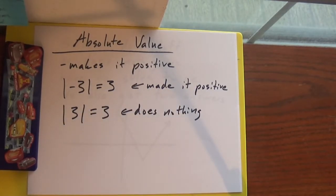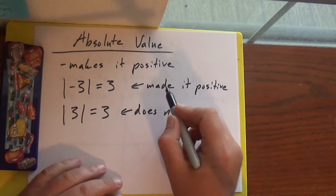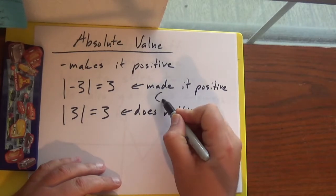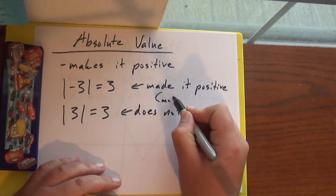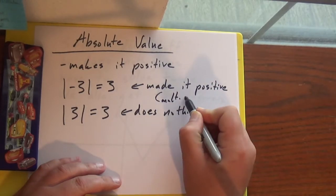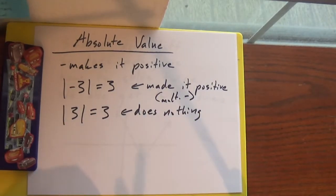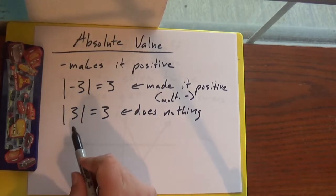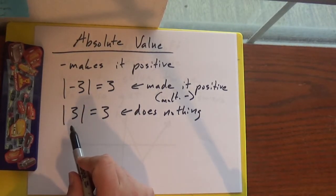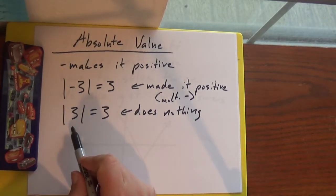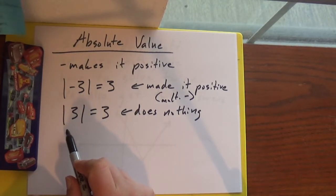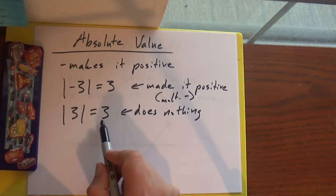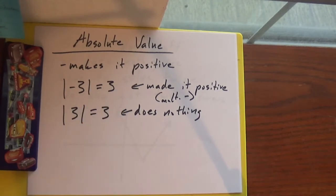How did it make it positive? Basically by multiplying by a negative. And on this one I've got 3 — it's already positive so it does nothing. It stays the same. It's 3.